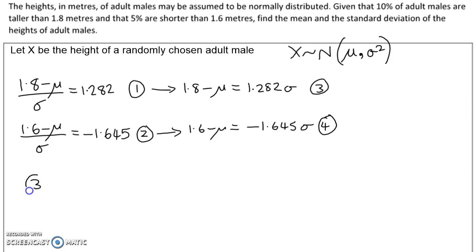I'm going to do equation 3 take away equation 4. On the left-hand side, I'm going to be left with 0.2, and on the right-hand side, 2.927 sigma. So sigma is 0.2 divided by 2.927, which is 0.0683 to 3 significant figures.